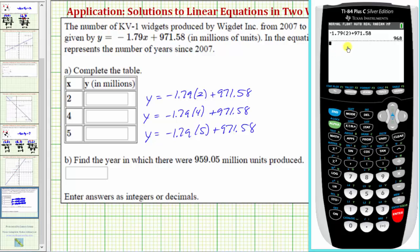To do this, instead of entering the expression again, we can press second, enter, which brings up the previous entry, but we can now edit this. Let's just change the two to a four. So four, and then enter, and now we'll change the four to a five to determine the corresponding y value when x is five.